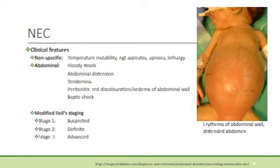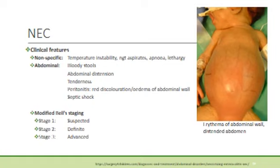When staging NEC, the modified Bell staging is used, considering systemic signs, intestinal signs, and radiological signs to guide management. In stage 1, that is suspected NEC, the baby might have temperature instability, apnoea or bradycardia, residual nasogastric tube aspirates and stomach distension. On radiology, there might be normal findings or mild ileus and bowel oedema.